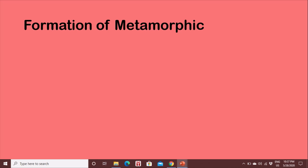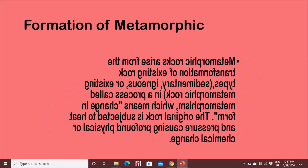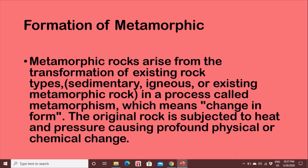Formation of metamorphic rock. Metamorphic rocks arise from the transformation of existing rock types — sedimentary, igneous, or existing metamorphic rock. In a process called metamorphism, which means change in form, the original rock is subjected to heat and pressure, causing profound physical or chemical change.